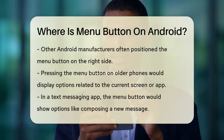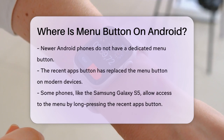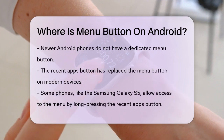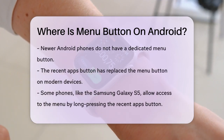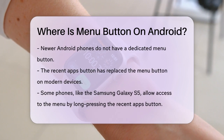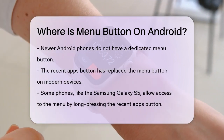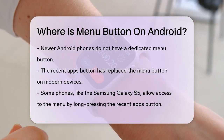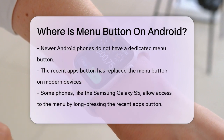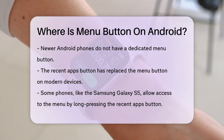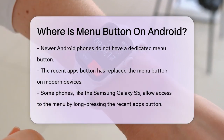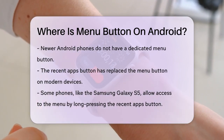However, if you're using a more recent Android phone, the menu button has been replaced by the recent apps button. On some phones, like the Samsung Galaxy S5, you can still access the menu by long pressing the recent apps button, but this is not a standard feature across all devices.